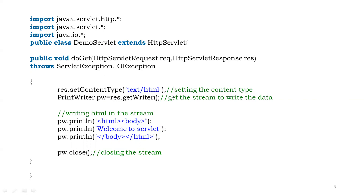This is common for both types of Servlet. When you want to process the request and produce the response, and display it on the browser, you have to set the content type first for the response. Then you get the writer — the stream to write the data onto the browser, sending back the response. With the PrintWriter, we are printing some information. This is one simple program where I am displaying a message: 'Welcome to Servlet.' I am using a PrintWriter and println is the method. Since I am displaying it in the browser, I am using HTML tags and the message is 'Welcome to Servlet.' Once everything is done, I am closing the stream. This is how a Servlet works, the life cycle of the Servlet, and how you can implement it in Java.